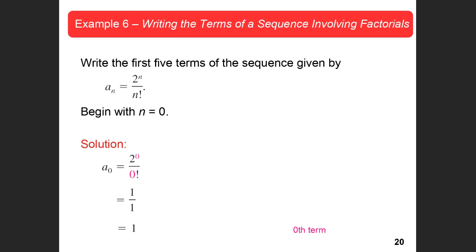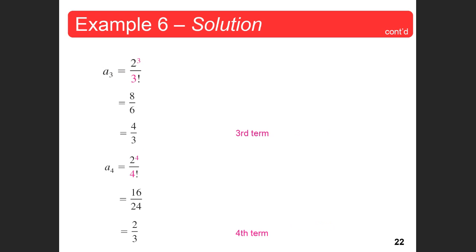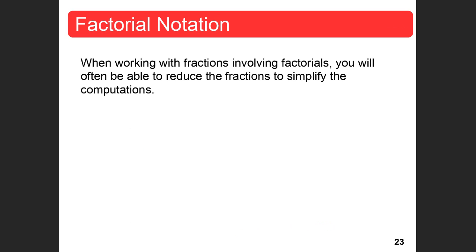Write the first five terms of the sequence a sub n equals 2 to the n over n factorial, beginning with n equals 0. Plugging in 0: 2 to the 0 is 1, and 0 factorial is 1, so the first term is 1. For n equals 1: 2 to the first is 2, and 1 factorial is 1, so that's 2. For n equals 2: that's 4 over 2, which is 2 again. For n equals 3 we get 4/3, and for n equals 4 we get 2/3. When working with fractions involving factorials, you can often reduce the fractions to simplify the computations.